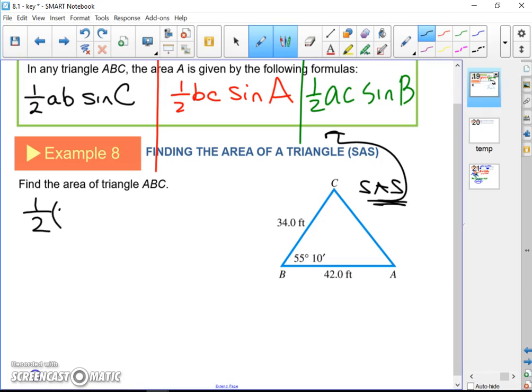So the formula is going to say one half times one of the sides times the other side times sine of the angle in between.